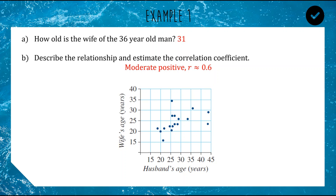It could be closer to 0.5 — it's hard to say; if you want to check perfectly you can put them into a calculator. I know it's going to be around 0.5 or 0.6, so we would say that is a moderate positive relationship.